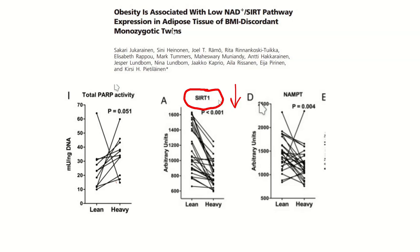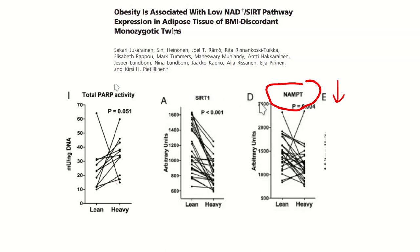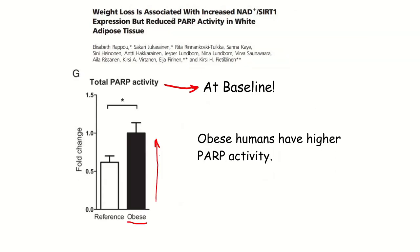They also showed that the heavier twins have less SIRT1 activity. SIRT1 is a deacetylase — it takes acetyl groups off your mitochondrial enzymes and keeps them running. Acetyl groups come from your food, but they're kind of like rust; they stick on your enzymes and slow them down. The heavier twins also have less NAMPT, which is involved in NAD+ recycling. All of these things are involved in NAD+ metabolism.